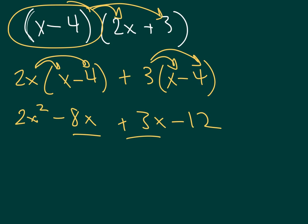And we can combine our like terms, 2x squared minus 5x minus 12. And what I would like to point out here is that if we look